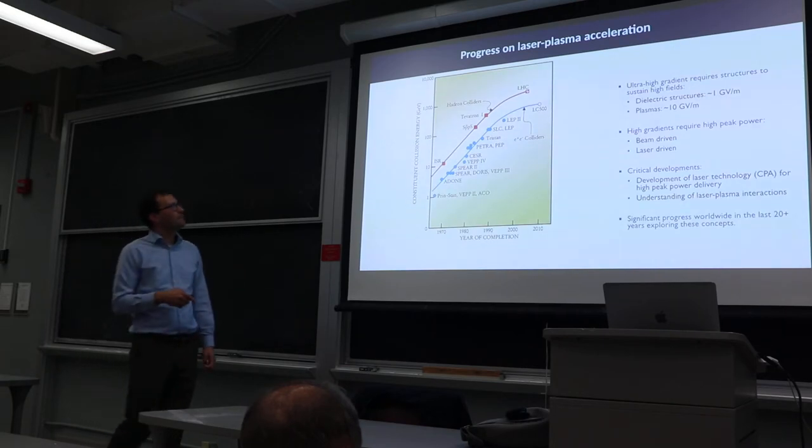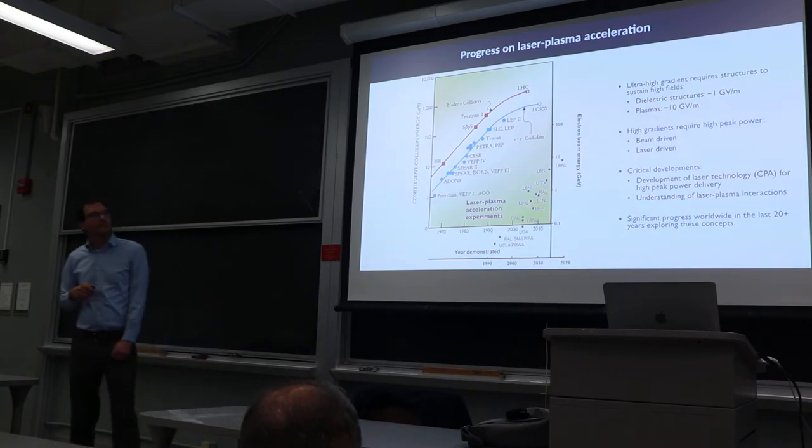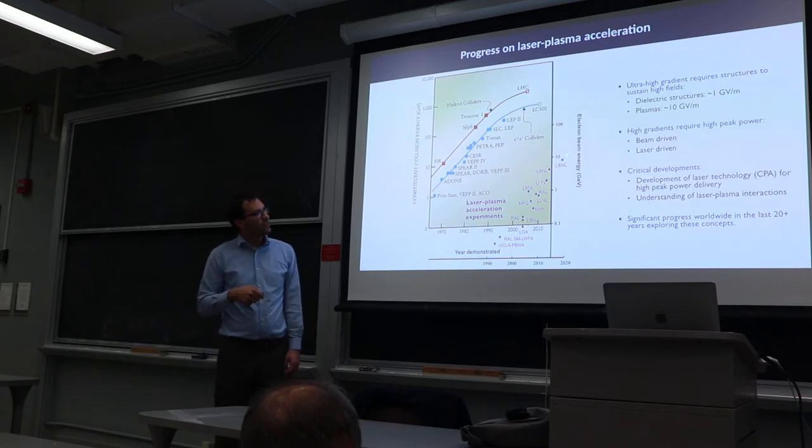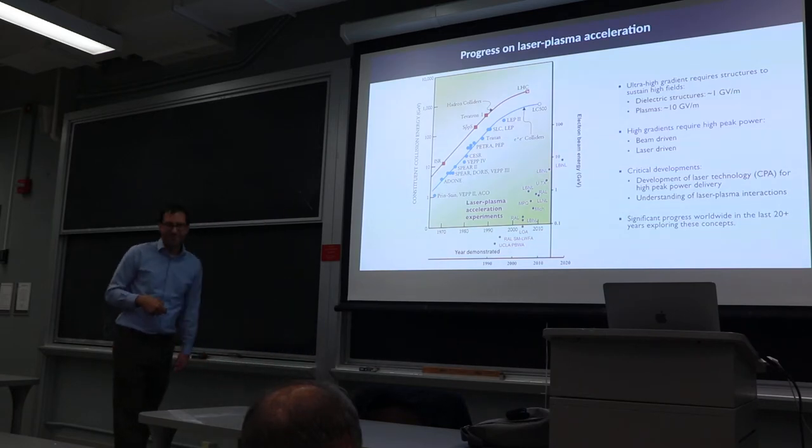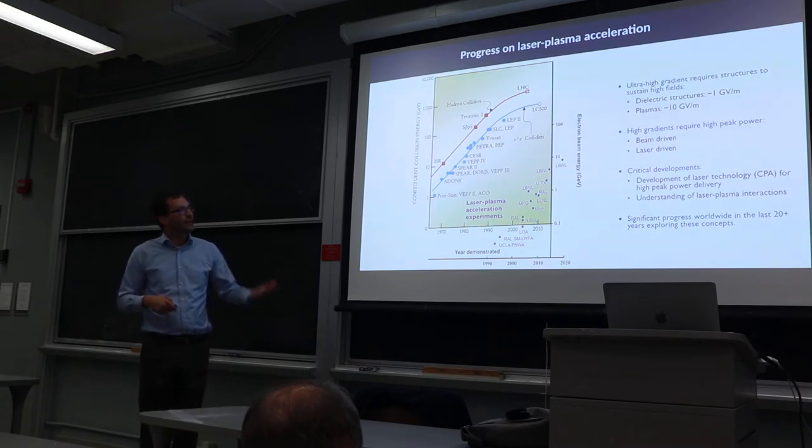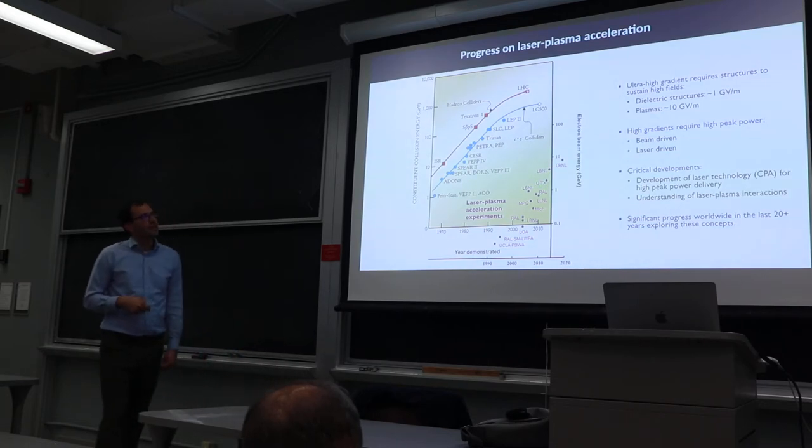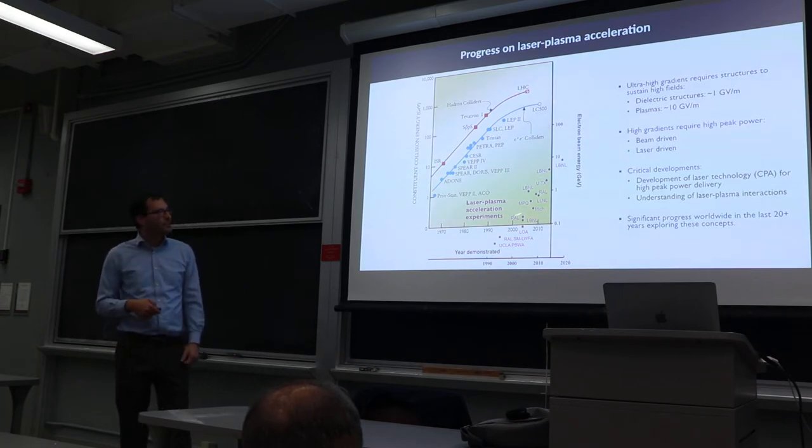Let's go back to this Livingston plot and put the laser plasma accelerator experiments on the slide. Here is the most recent result from 2013 at 4.2 GeV, and you can see it's a very nice trend, getting about a factor of 10 increase in energy over about six years. It's actually doing a little bit better than Livingston's original prediction.